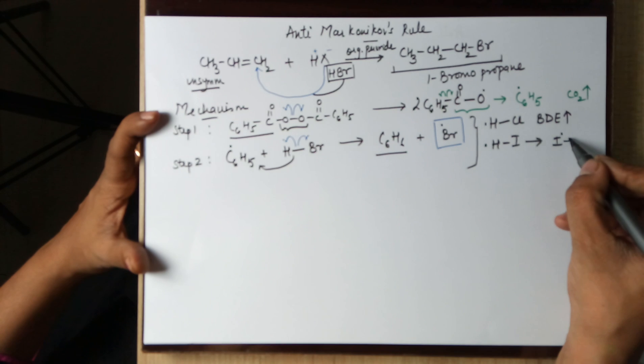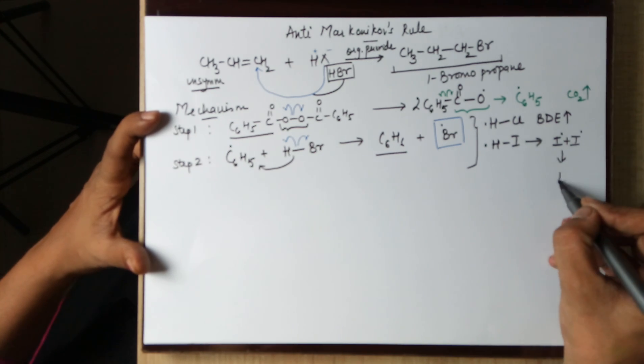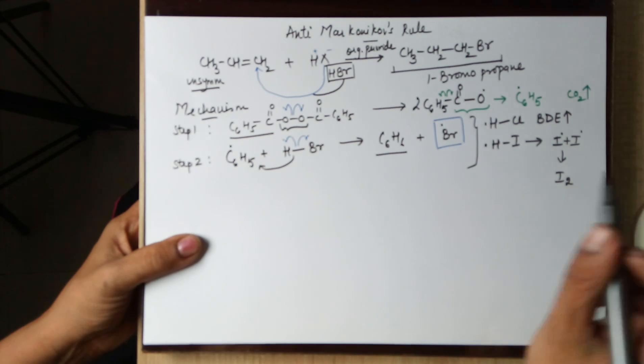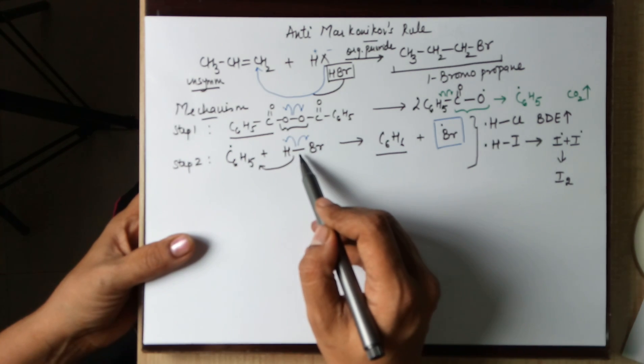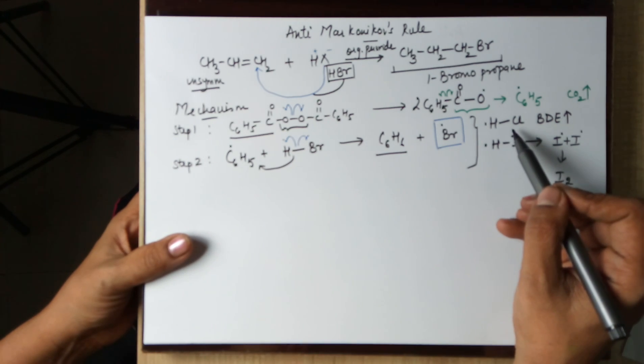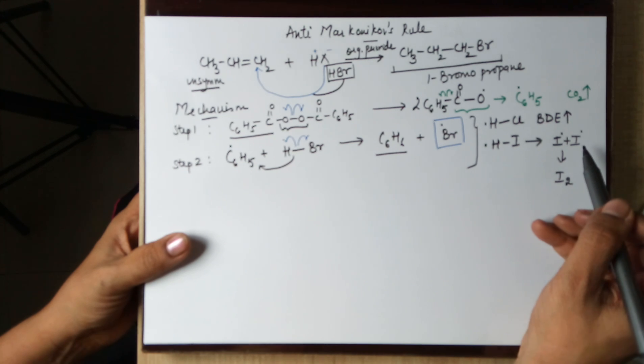But these are so reactive that they quickly combine with another I negative to form I2. Hence the reason behind anti-Markovnikov's rule being applicable only to HBr is its bond dissociation energy which is neither too high nor too low. Had it been high, the bond doesn't cleave and had it been low, it leads to another by-product and not the iodide free radical that we require for the reaction.